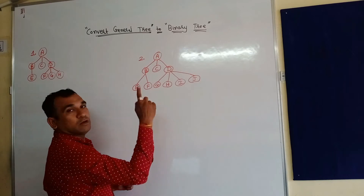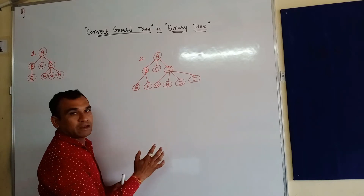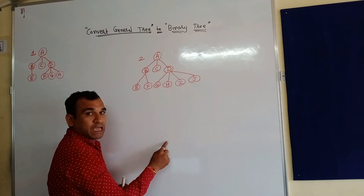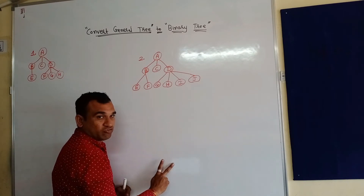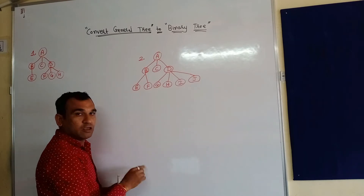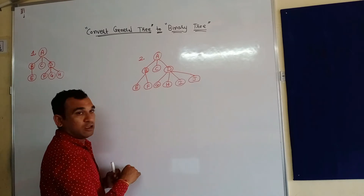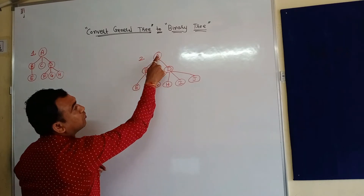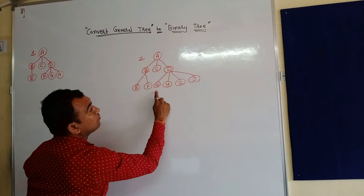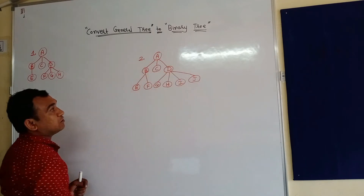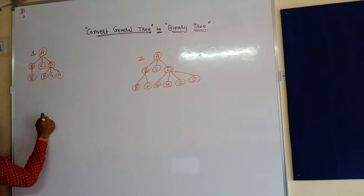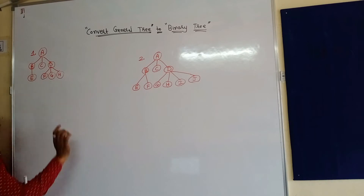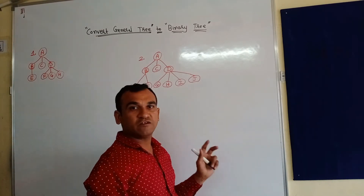In a binary tree, for any particular node we can have at most two children — that tree is called a binary tree. In this case, node A has three children and node D has four children, so this is not a binary tree. Similarly, in this other tree, A has three children and D has three children, so that is also not a binary tree. These two are general trees.